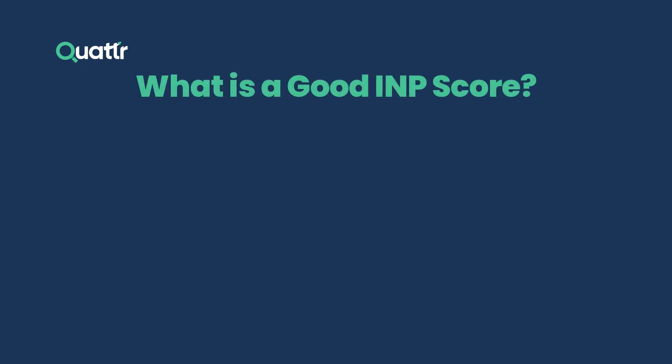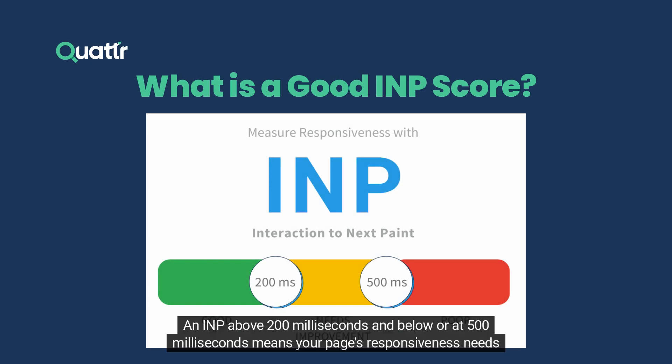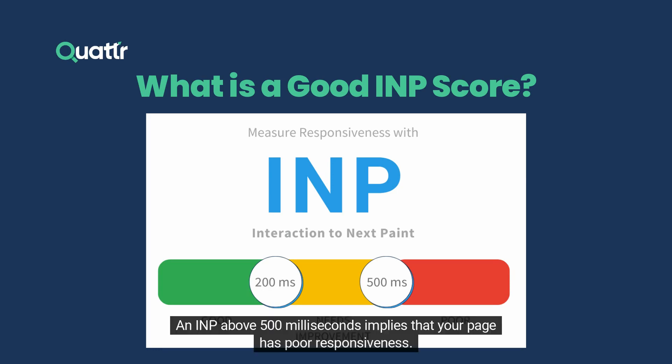INP is measured in milliseconds. According to Google, an INP score below or equal to 200 milliseconds indicates good responsiveness. An INP above 200 milliseconds and below or at 500 milliseconds means your page's responsiveness needs improvement. An INP above 500 milliseconds implies that your page has poor responsiveness.